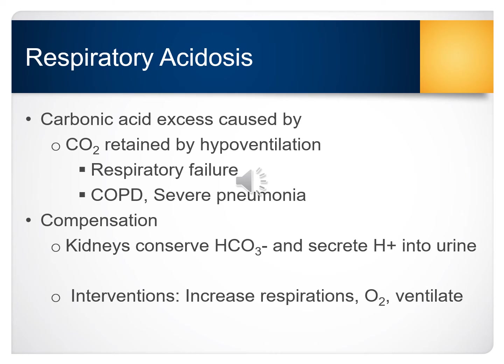Acid-base imbalances typically occur when the compensatory mechanisms fail. Respiratory acidosis typically occurs when there is hypoventilation, so CO2 is being retained. This often happens in respiratory failure — you'll see this in COPD patients and patients with severe pneumonia. To compensate for respiratory acidosis, the kidneys conserve bicarbonate and secrete an increased concentration of hydrogen ions into the urine. During acute respiratory acidosis, the renal compensatory mechanism doesn't usually happen until about 24 hours after the person has become acidotic.